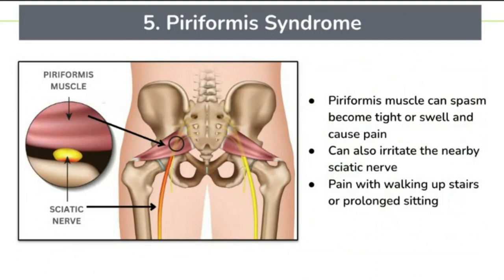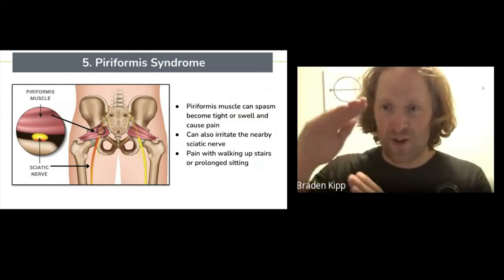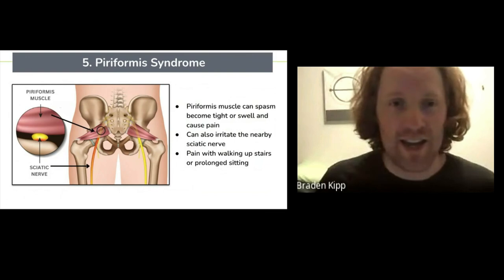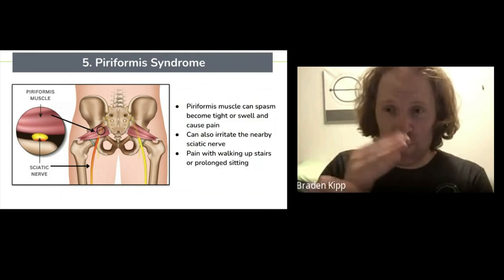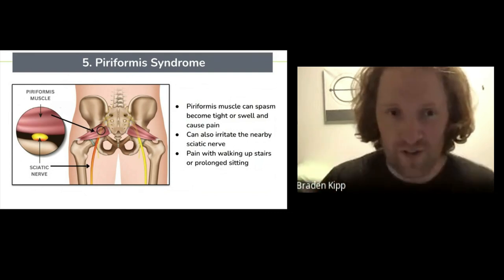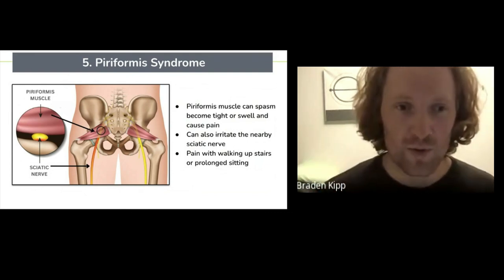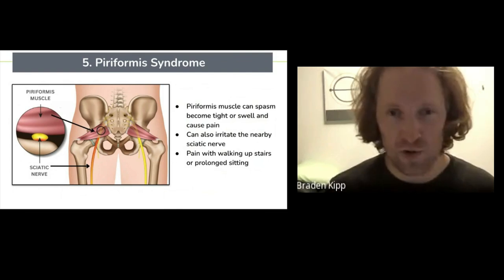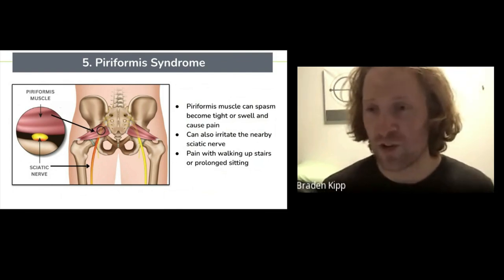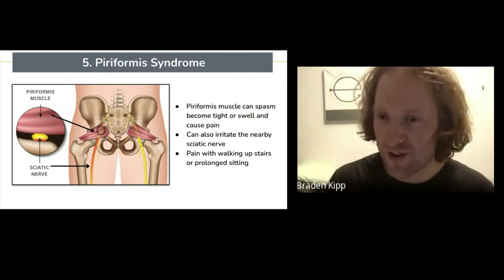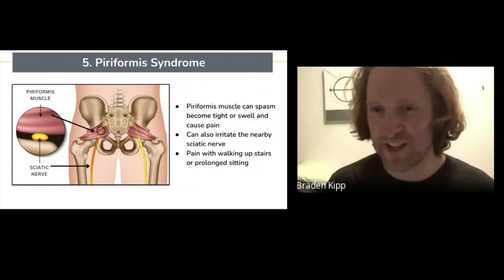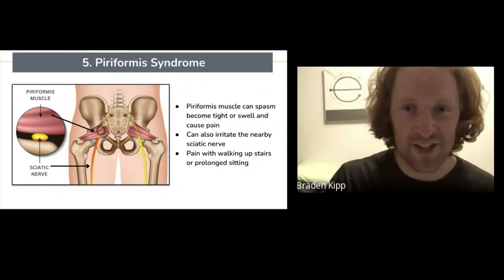Number five is piriformis syndrome. You have a big muscle in your buttock called your piriformis. It runs right over that nerve and can spasm, become tight and swell, causing pain. It can also put pressure directly onto that nerve and irritate it. You might have pain walking upstairs or with prolonged sitting. A lot of times when people are commuting to work and sitting on that nerve too long, their leg will go to sleep and when they get out of the car, their leg will feel like jello.